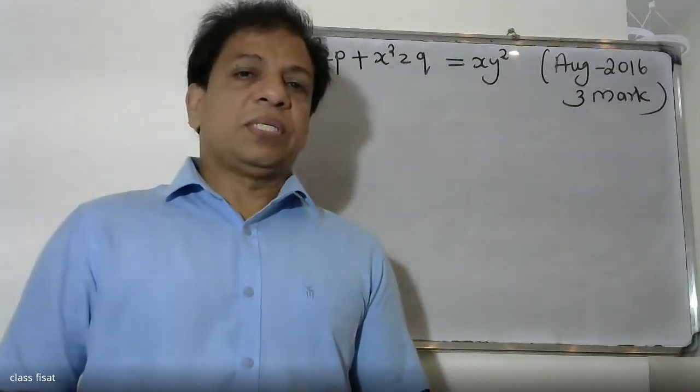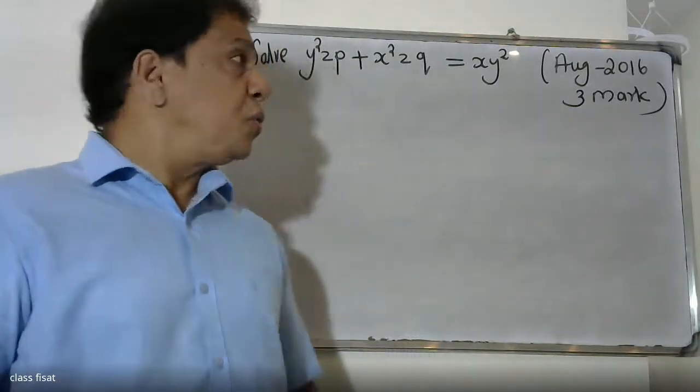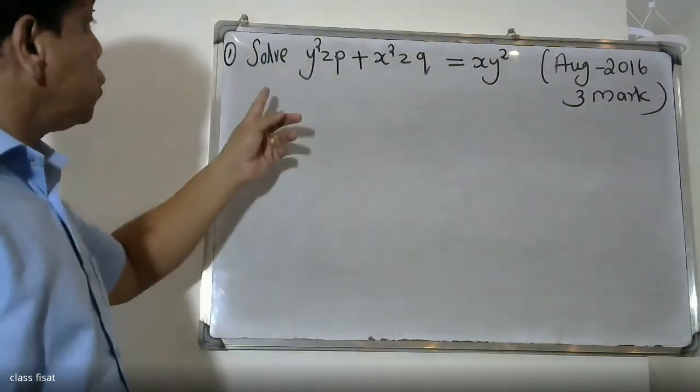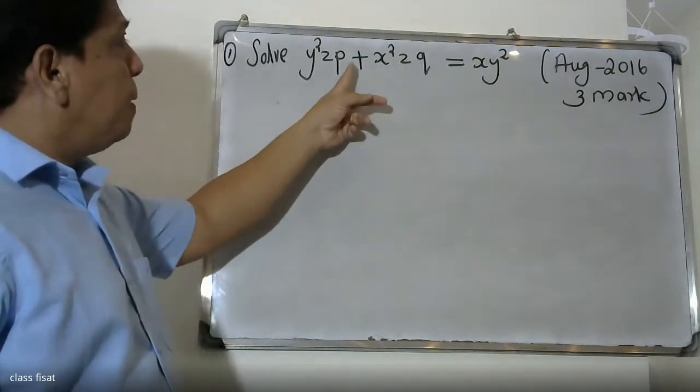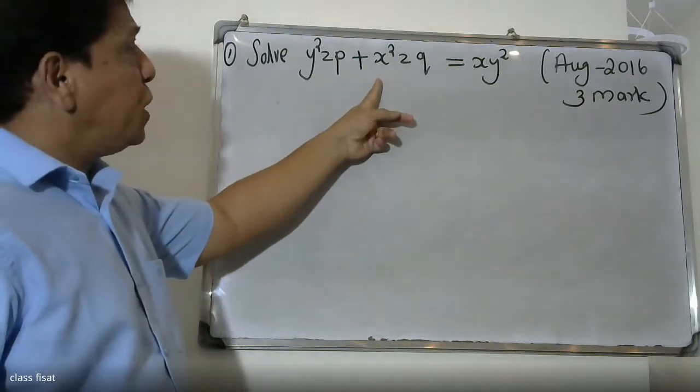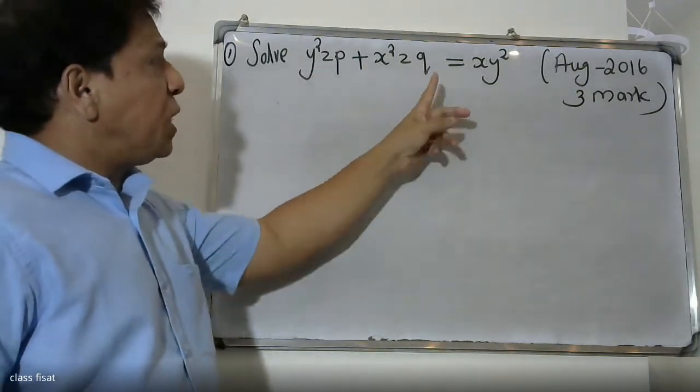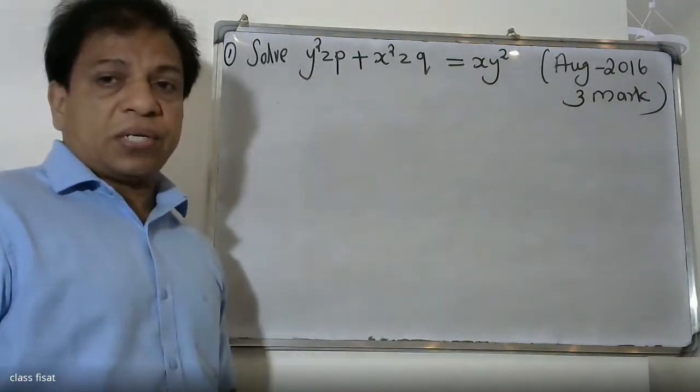Good morning students. At the university, the question is: y-squared p plus x-squared q is equal to x y-squared.